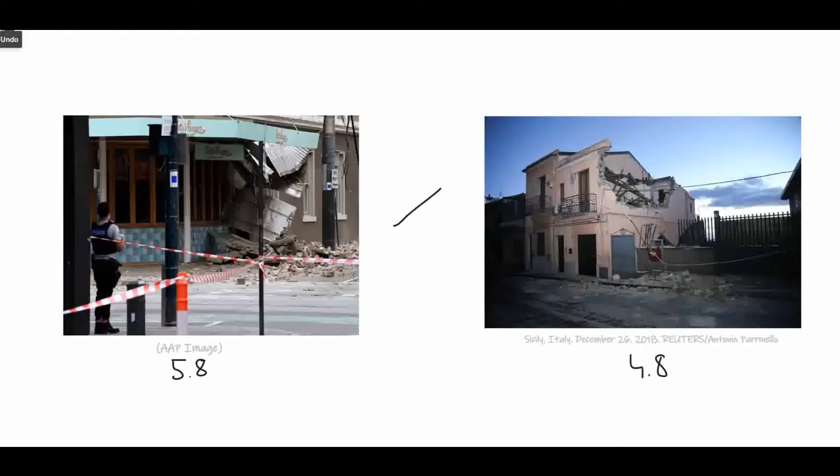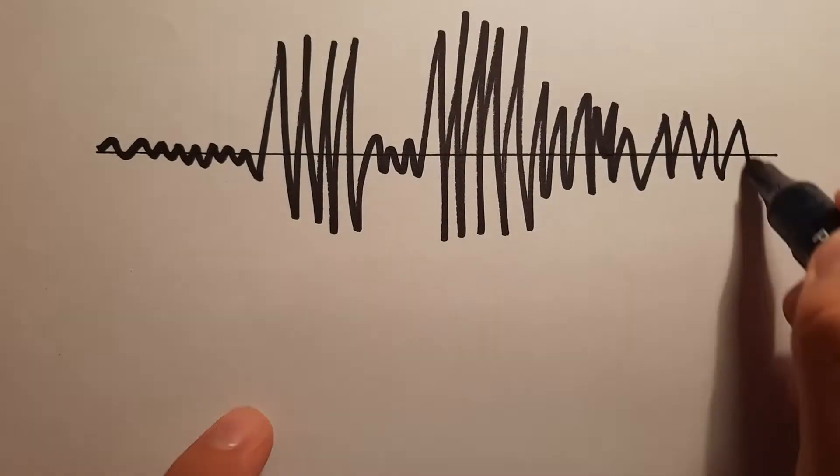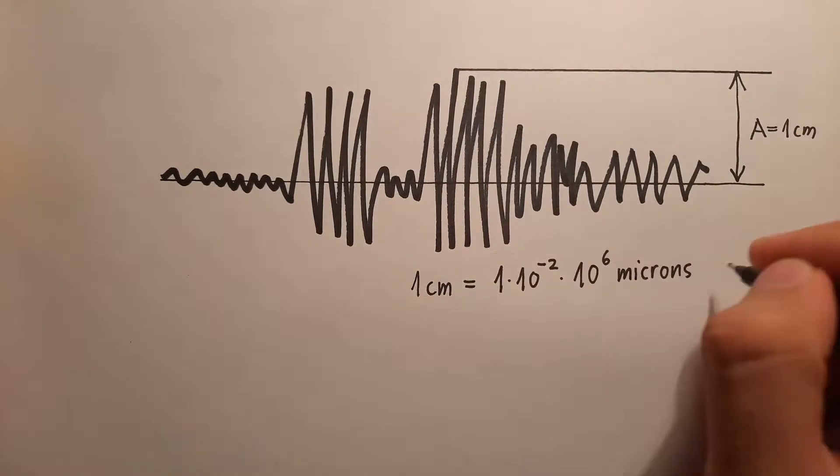So a 4.8 earthquake could be stronger than a 5.8 one. The difference of 1 here is actually very large, 10 times to be exact.